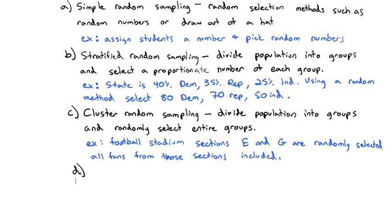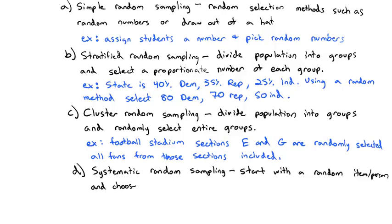The last random method we're going to use is called systematic random sampling. The idea behind systematic random sampling is we start with a random item or person, and choose every nth person after this. That means like every fifth person, or every twelfth person, or every thirtieth person.